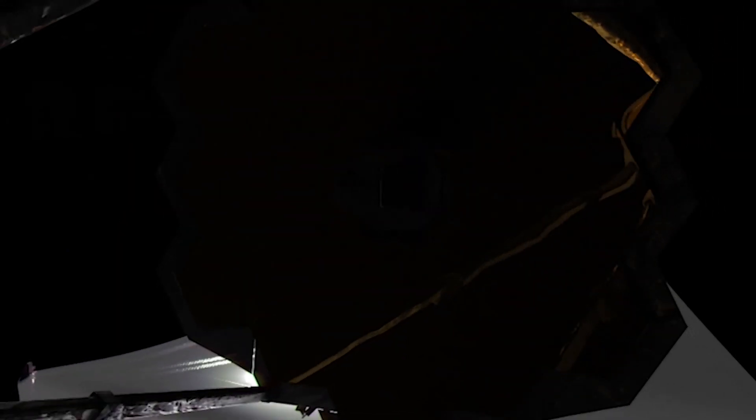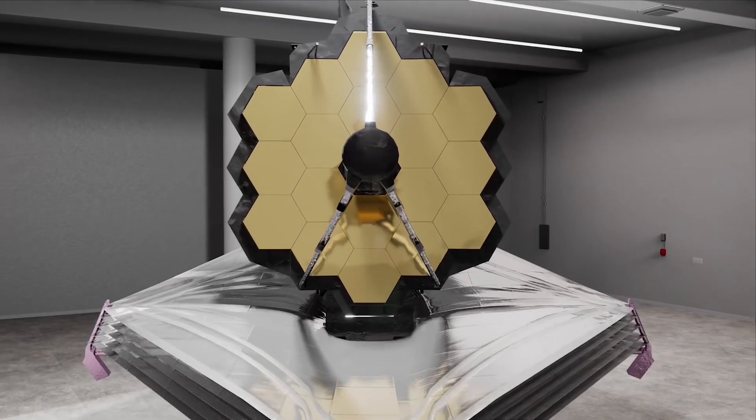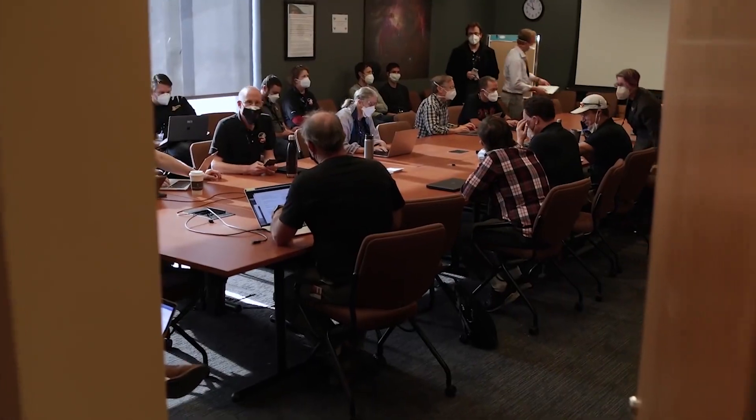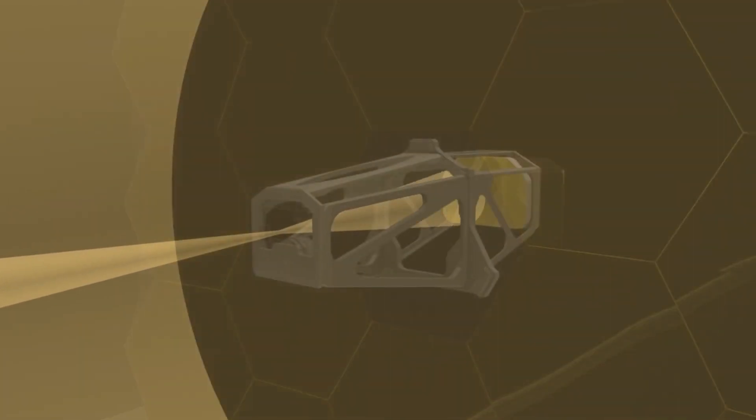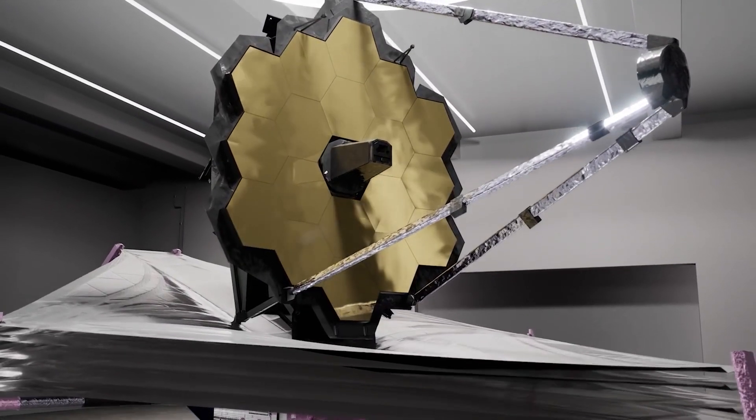This selfie was not captured by an externally mounted engineering camera, but with a specialized pupil imaging lens inside of the telescope's NIRCAM instrument. The NIRCAM is one of the four key instruments of the JWST and was configured only for engineering and alignment purposes. The Webb team considered this a bonus image which gave engineers the assurance that NIRCAM is successfully receiving light.